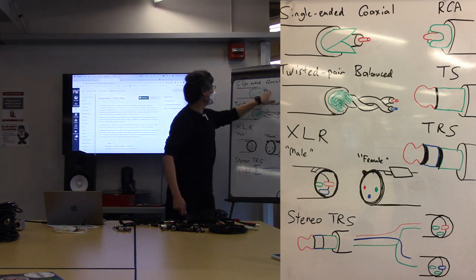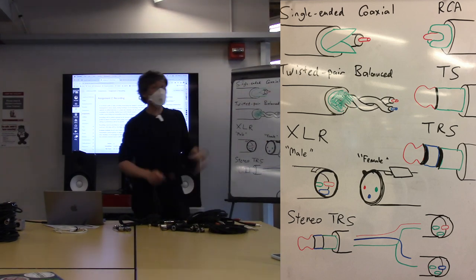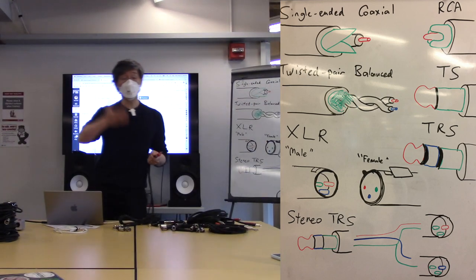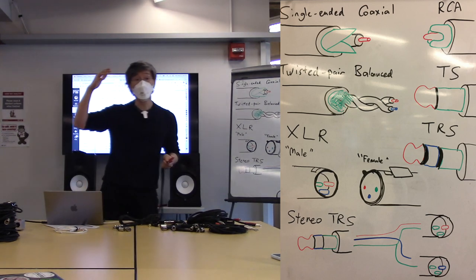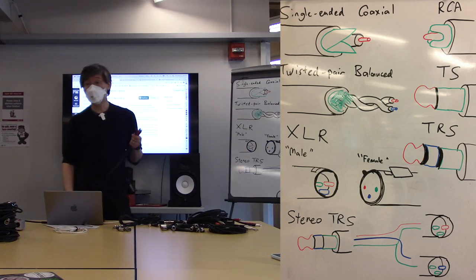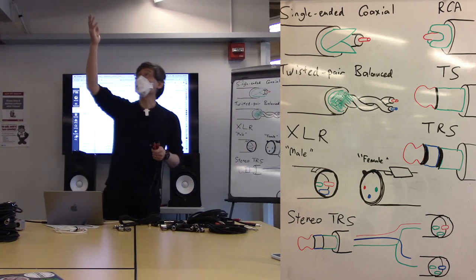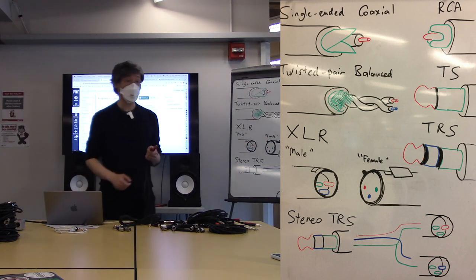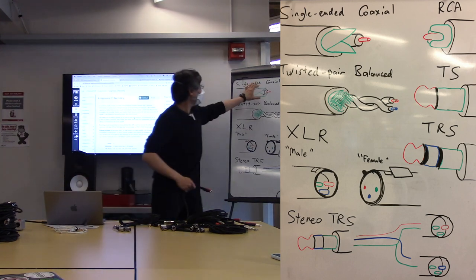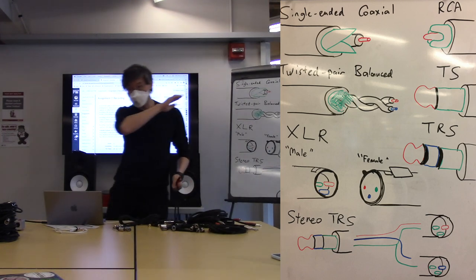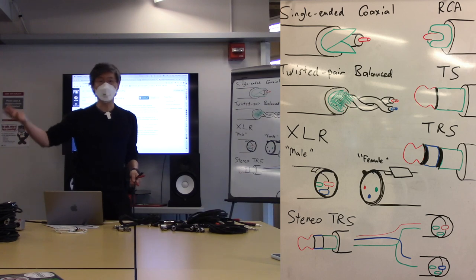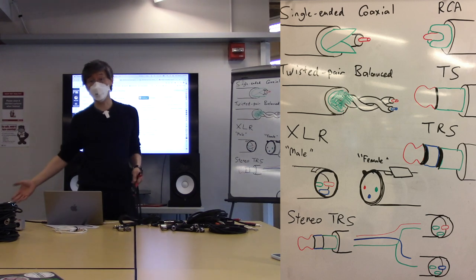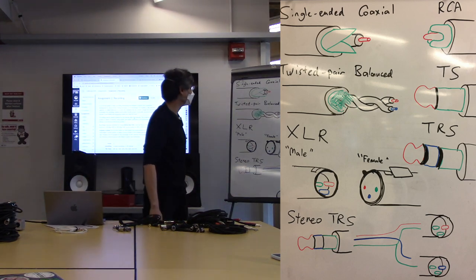RCA connectors are known as single-ended connectors. Both the cable inside and the connector kind of resemble each other. There's the thing in the middle, and then there's the thing that surrounds it. The thing that surrounds it is generally connected to whatever the ground bus of your gear is going to be. The whole point is to absorb electrical interference.